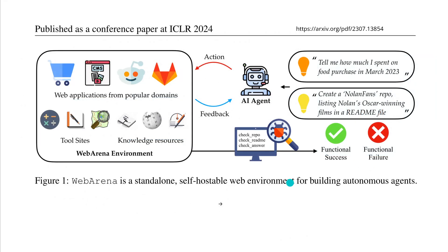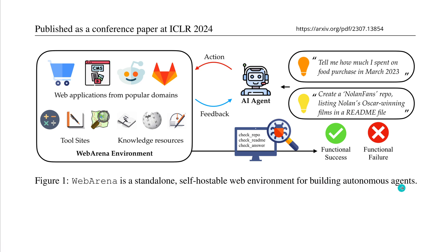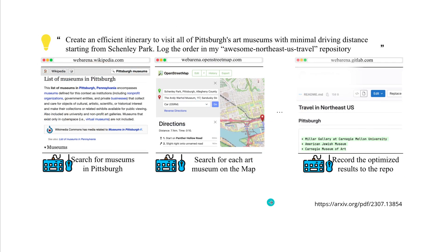The standalone, self-hostable web environment for building autonomous agents includes web applications on domains, tool sites, and knowledge resources — from Wikipedia to company-specific PDFs or internal documents. Those are your environment data. You have an AI agent that takes action and feedback.